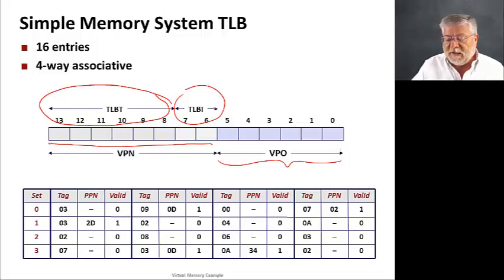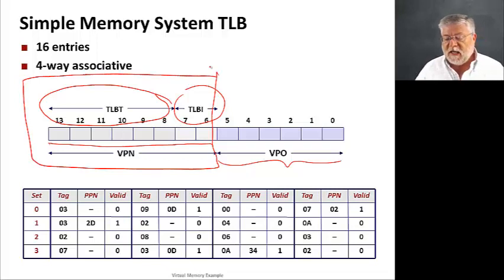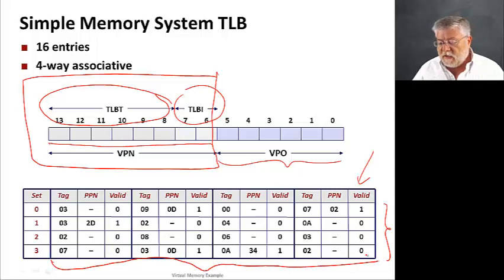That just goes straight down to the physical page number. So, the TLB only needs to cache the virtual page numbers and their corresponding physical page number. So, here, at the bottom, you then see typical contents for this TLB. It has these four sets, four entries per set for a total of 16, some of which are valid, some are invalid. And, for the ones that are valid, we have a corresponding physical page number.